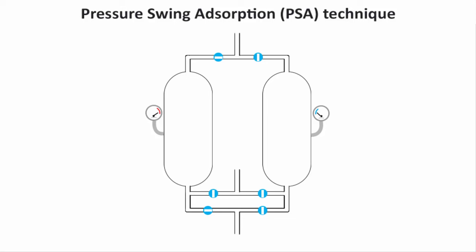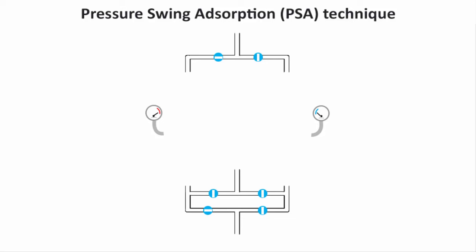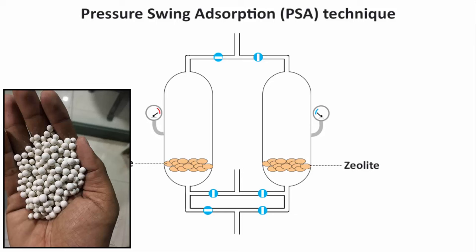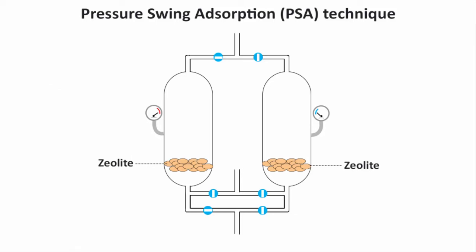Now let's see how PSA technology works. You need two pressurized tanks or vessels. At the bed level of these two tanks, zeolite pellets are placed to act as an adsorbent. The process starts by blowing dry compressed air through a valve into the first vessel, where the pressure inside is built to reach around 5 to 10 bar — anywhere around 70 to 150 psi.